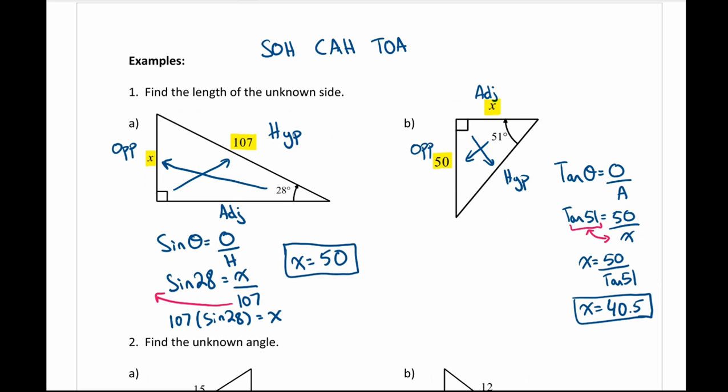Those are the two different scenarios you could have: the missing piece is on the top, so you bring the bottom up and multiply — or the missing piece is on the bottom, so you switch the two and divide.